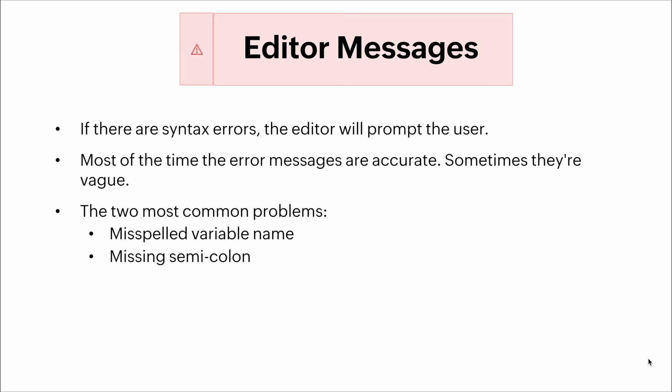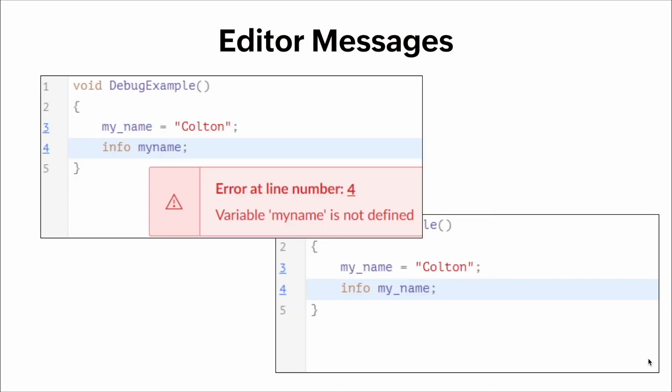Now we also have our editor messages. If there are any syntax errors, the editor will prompt the user. Most of the time the error messages are accurate; sometimes they're vague. The two most common problems are going to be misspelled variable names and missing semicolons, so make sure you look through your Deluge code for those first. Here's an example: on the left side we have a function with a variable assigned a string. When we info out the variable, we get an error at line 4 saying the variable 'my name' is not defined — because we misspelled the variable name when we infoed it out. On the bottom right we see the corrected code with no editor message.